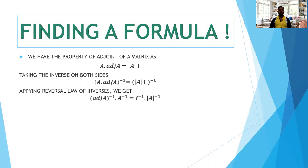Now, adjoint A inverse can be written as 1 by adjoint A. So into A inverse, we get A inverse itself is equal to — since I inverse is I itself, and determinant A is a value raised to the power minus 1, that gives us 1 by determinant of A.